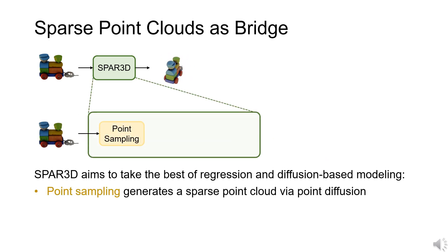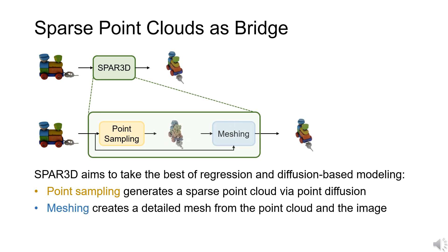SPAR3D presents a novel two-stage approach, aiming to take the best of both directions. The first stage generates sparse 3D point clouds using a lightweight point diffusion model which has fast sampling speed. The second stage uses both the sampled point cloud and the input image to create highly detailed meshes.